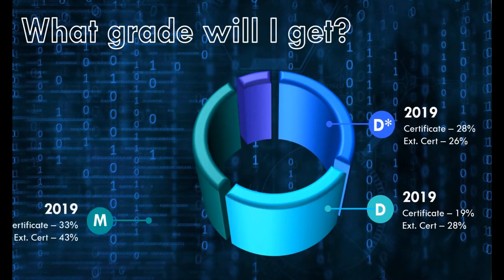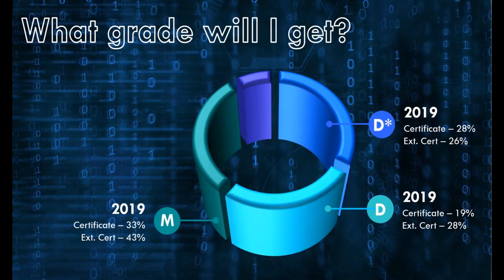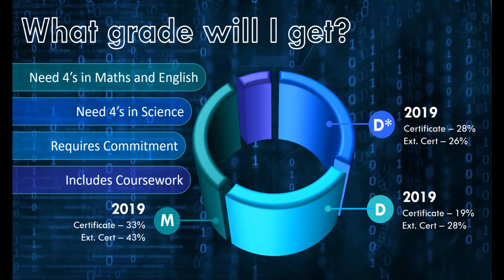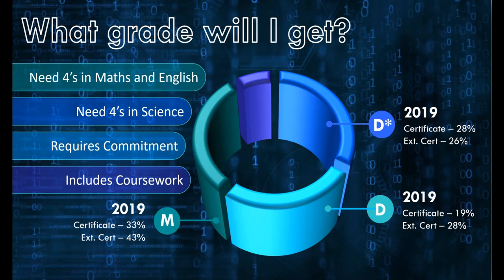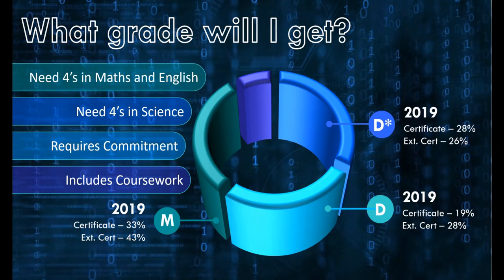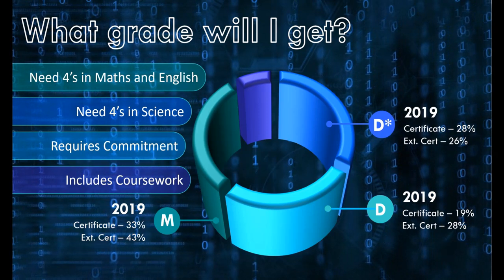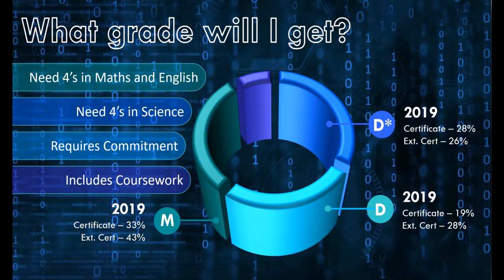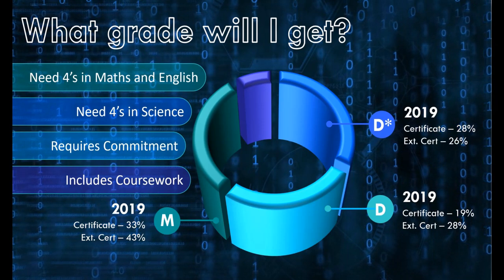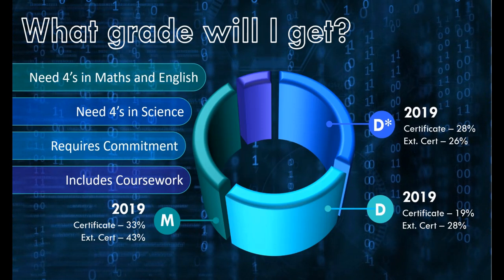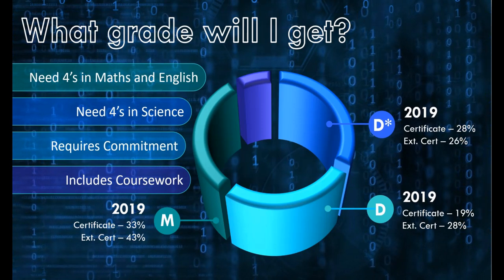If you do the work, you will benefit from an excellent grade in this subject. Our results in IT are outstanding and well above the national average. Last year, 47% of students realised a distinction in this subject. To apply, you should have at least fours in Science, Maths and English, and if you have done an IT based course you must have passed. For BTEC courses, we would expect you to have achieved at least a merit.